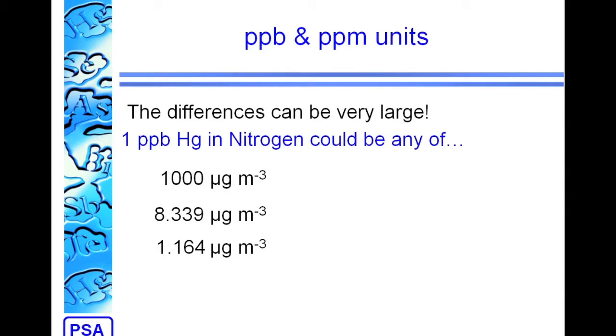If we compare PPB units on different bases, you can get some quite large differences. So if we calculate 1 PPB of mercury and nitrogen, you could end up with any of 1,000, 8.3, or 1.2 micrograms per cubic meter, depending on the basis of the measurement.